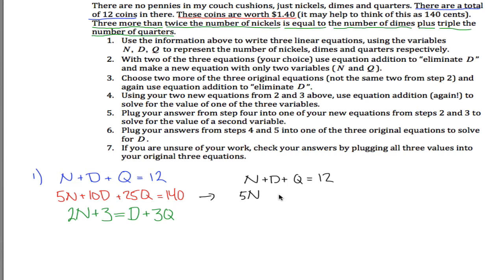5 nickel 10 dime 25 quarter equals 140, I'll leave that one alone also. But down here I want to line up all my variables, so I got 2N, but to get the D over on the left side I'm going to have to subtract D from both sides of the equation, and to get the 3Q over on the left side I'm going to have to subtract 3Q from both sides of the equation, and then to get the 3 over on the right hand side, I'm going to have to subtract 3 from both sides of the equation. So to line things up, I'm going to use these as my three equations rather than these.